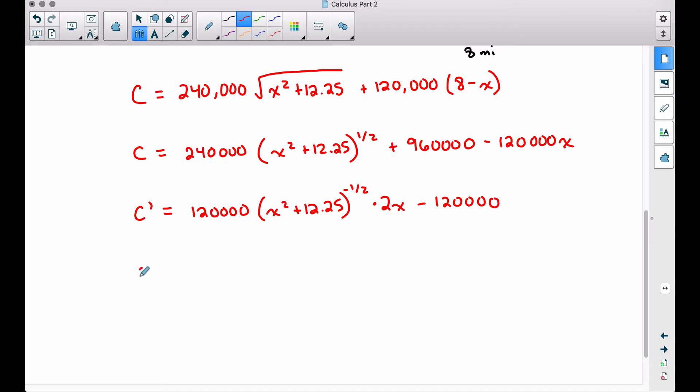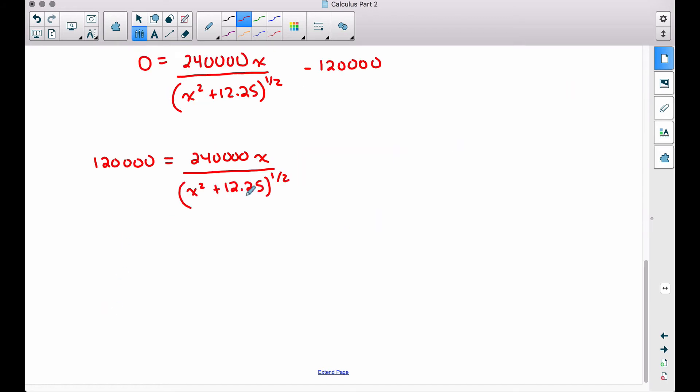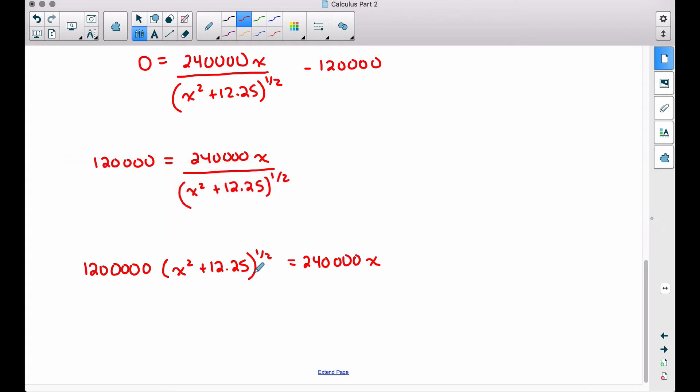So now we have our derivative. We're going to set this equal to 0. And now let's clean this up a little bit before we try to solve it. 2x times 120,000 is going to be 240,000x. And since this has a negative exponent, I'm going to move it to the bottom. And then minus this 120,000. From here, I'm going to move the 120,000 over here by adding. I'm going to multiply by this stuff raised to the 1 half power to get rid of the fraction. And now we have something where we can work on getting x by itself. That's what we're doing the whole time anyway. Since we have this 1 half power, let's square both sides to get rid of this rational exponent.